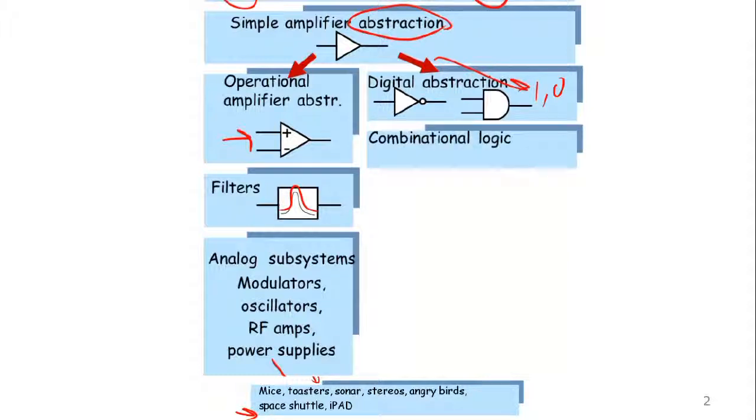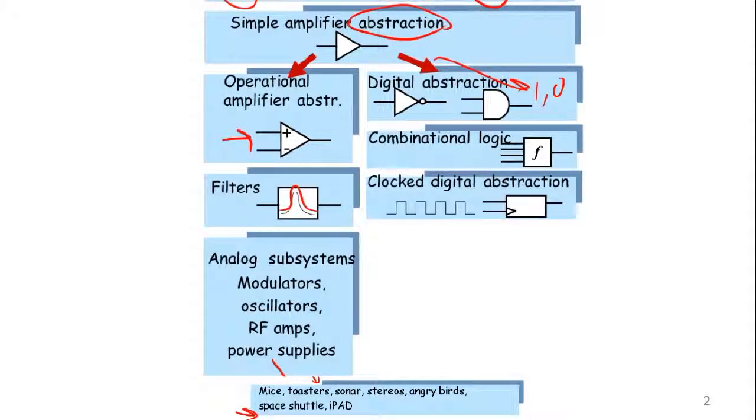Following that, we will build even more complex logic, combinational logic. And then, using combinational logic, we will apply some time domain signals, like clocks and so on, and build what we call clocked digital systems.